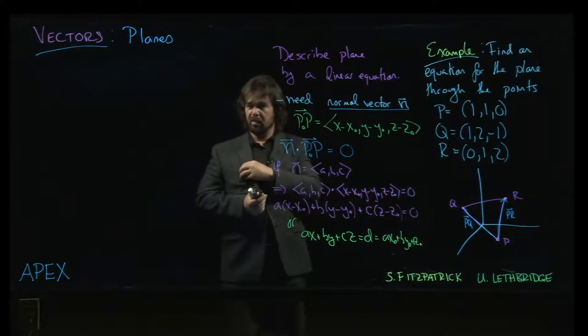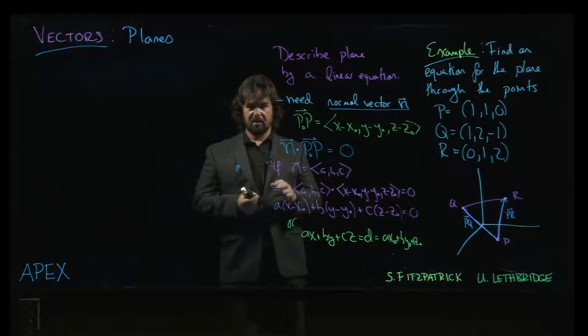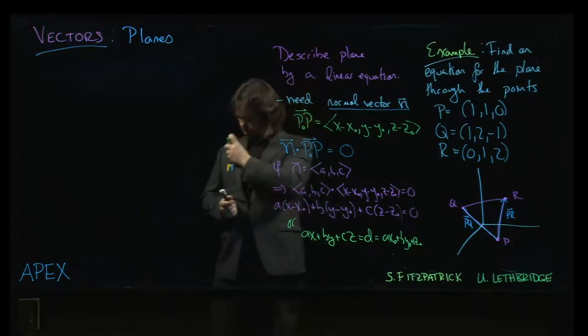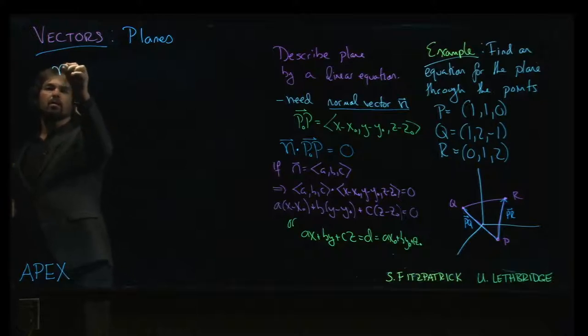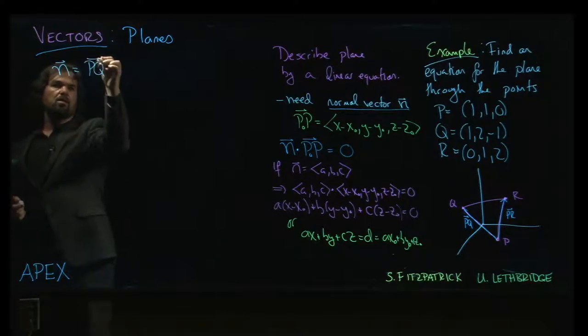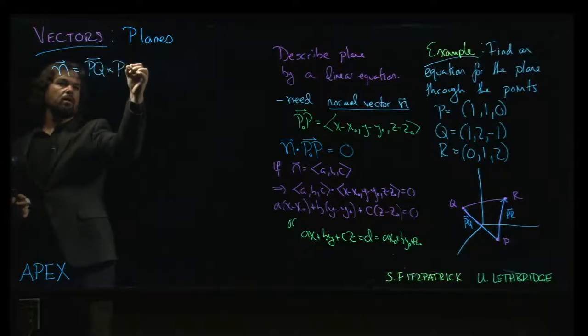Feel free to play around and you will find that it really doesn't matter which one you take, you'll get the same answer whichever way you decide to go. And so we can take those two vectors and use them to construct our normal vector. So our normal vector, I'm going to do PQ cross PR.